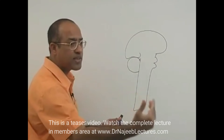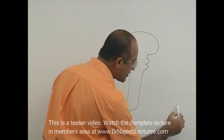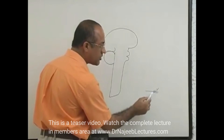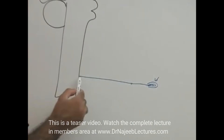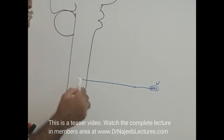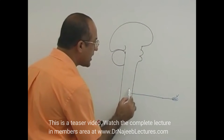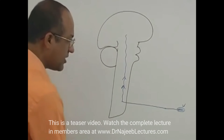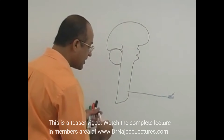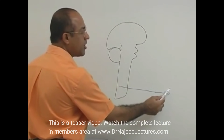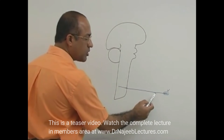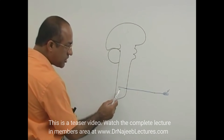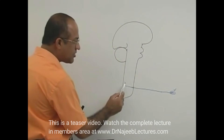First the CNS has to collect information and then make decisions and responses. Information collection starts from receptor points — receptors take the energy of a stimulus and convert it into action potentials. Action potentials travel through nerves to the spinal cord, and from there tracks take the information to the higher centers — these are called ascending tracks.